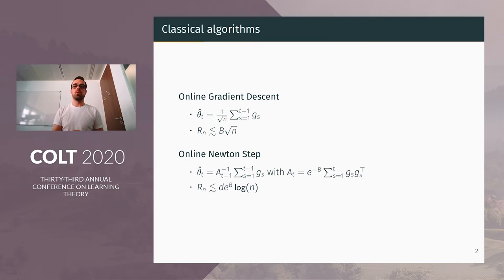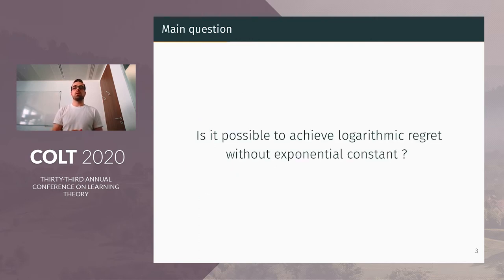Because the logistic loss is also exp-concave, we can use online Newton step, which will achieve a logarithmic regret. Because the logistic loss is only exponential minus B exp-concave, we will pay an exponential multiplicative constant in B. So you see that the online Newton step algorithm improves exponentially the dependence in N, but deteriorates exponentially the dependence in B.